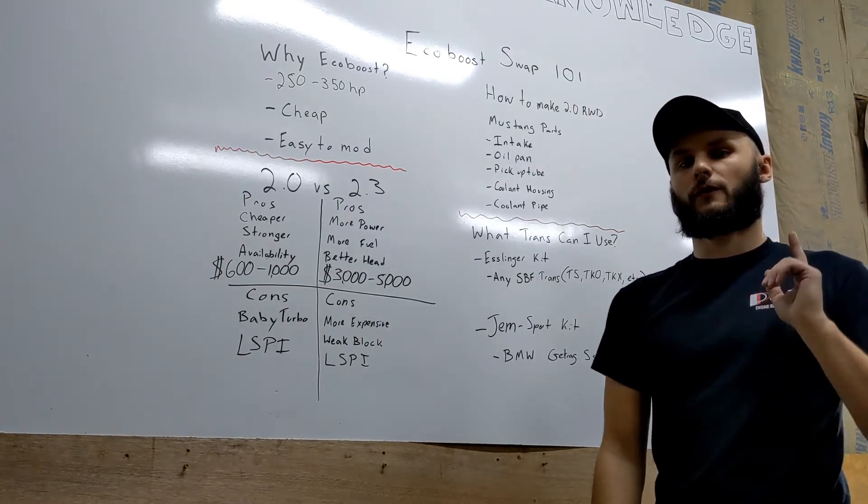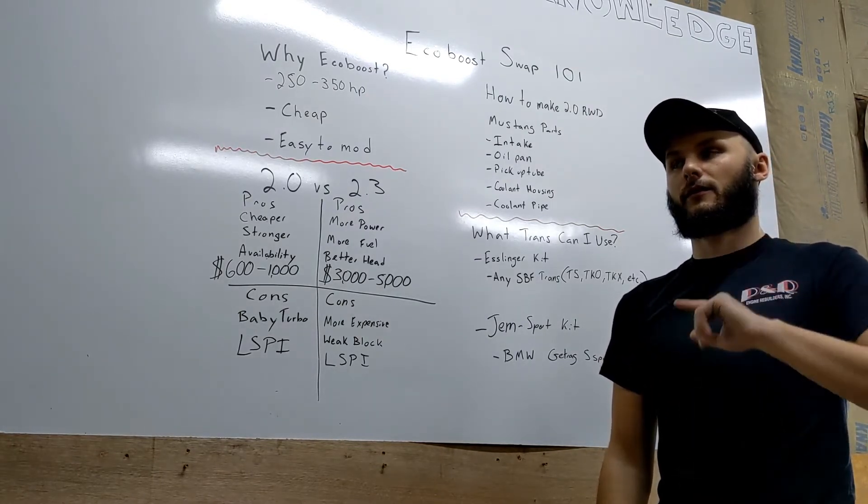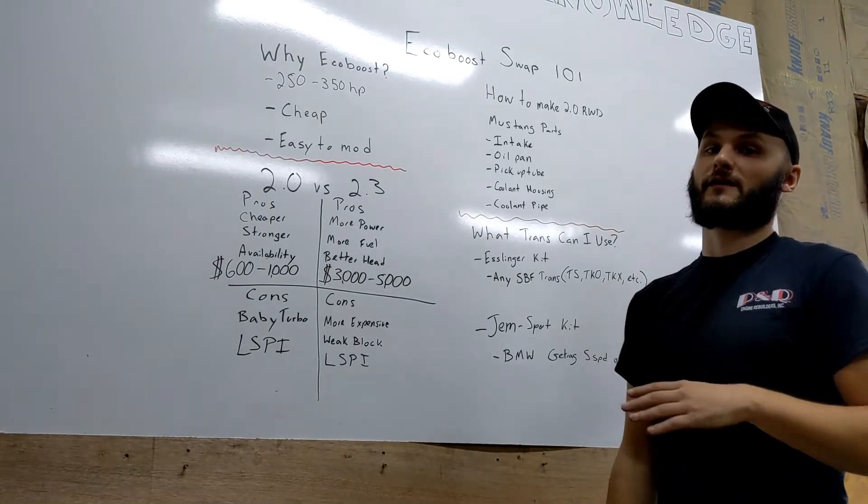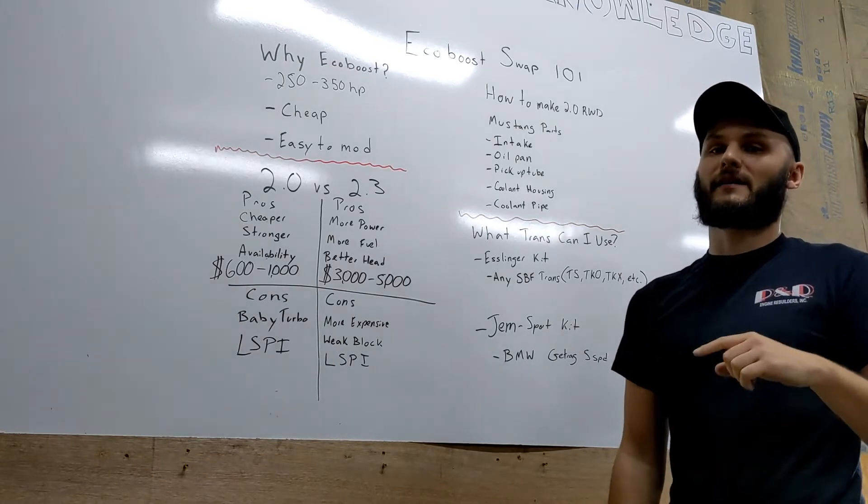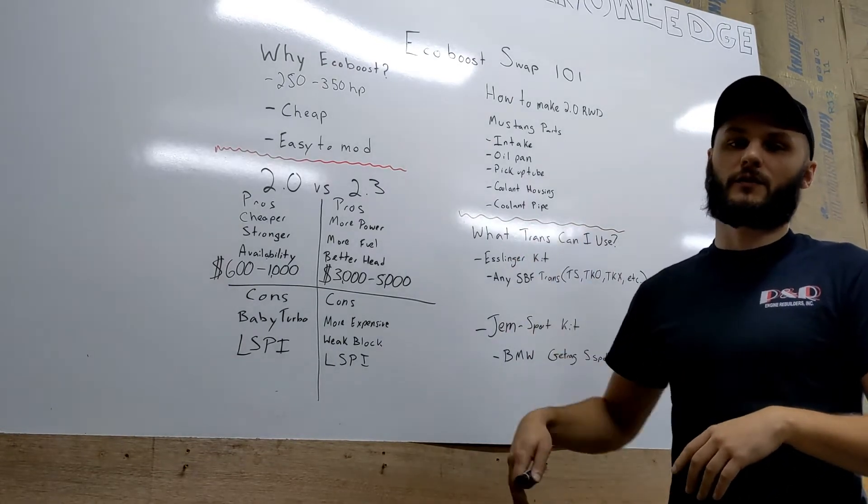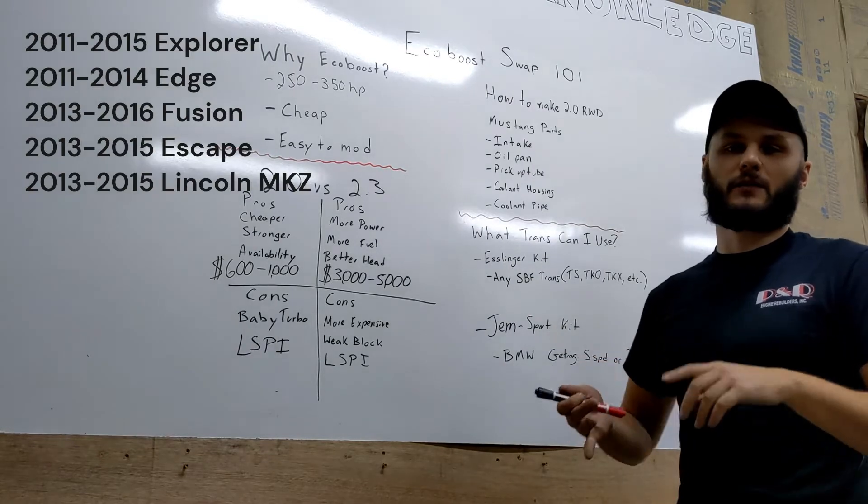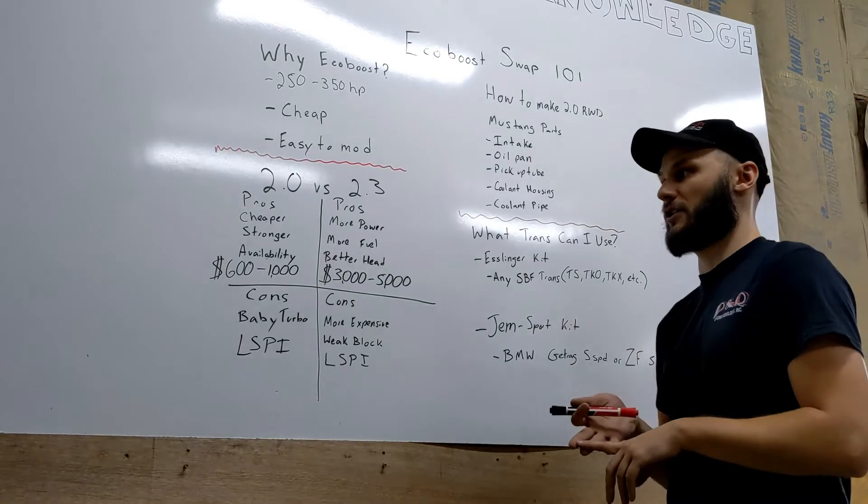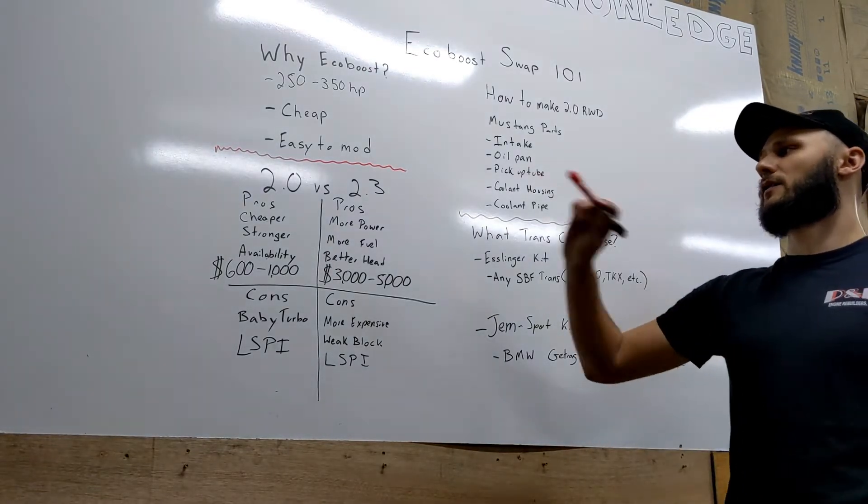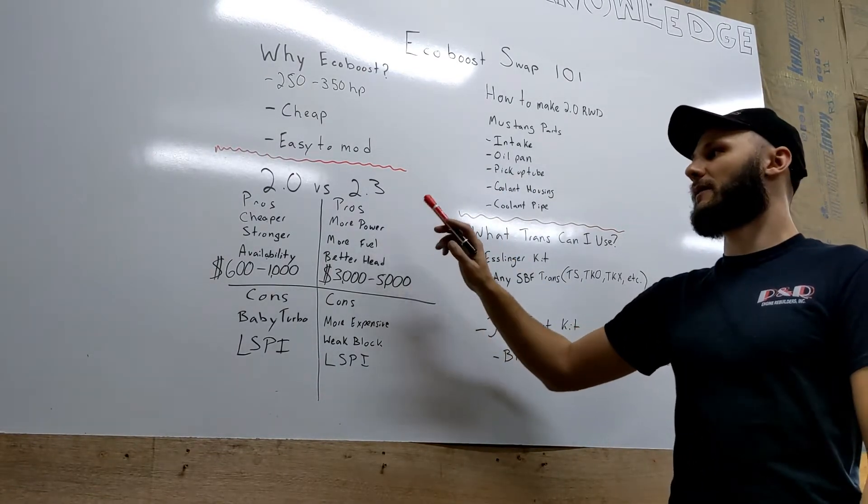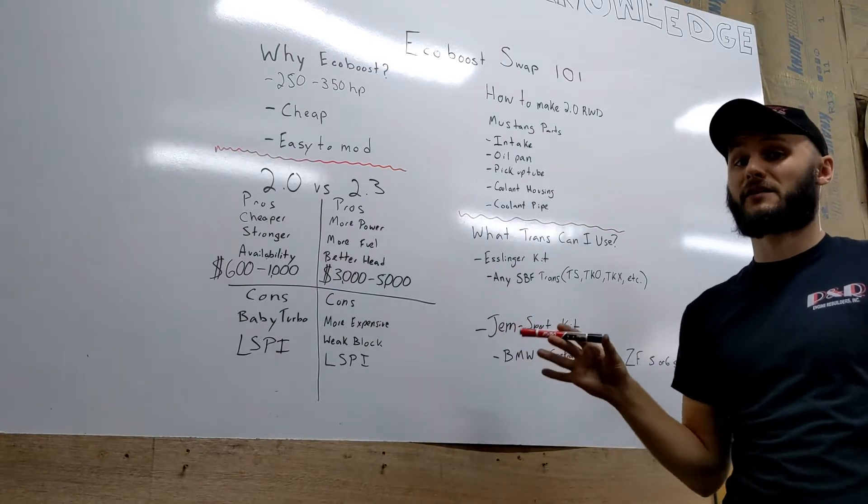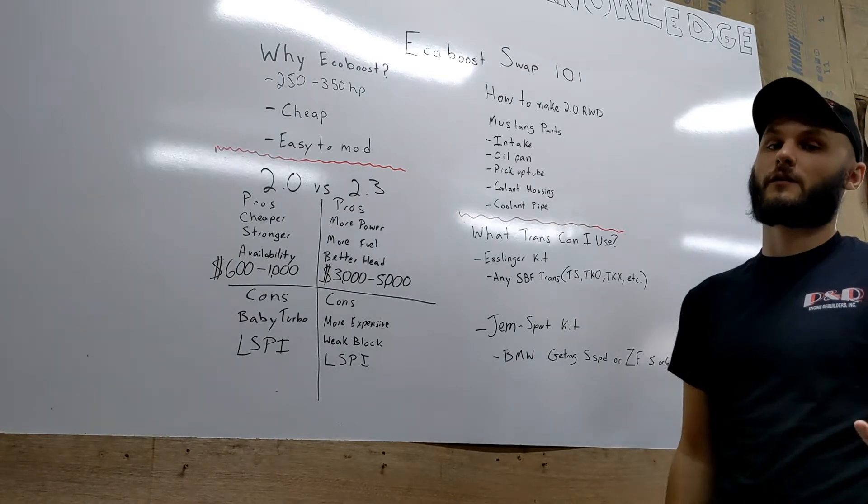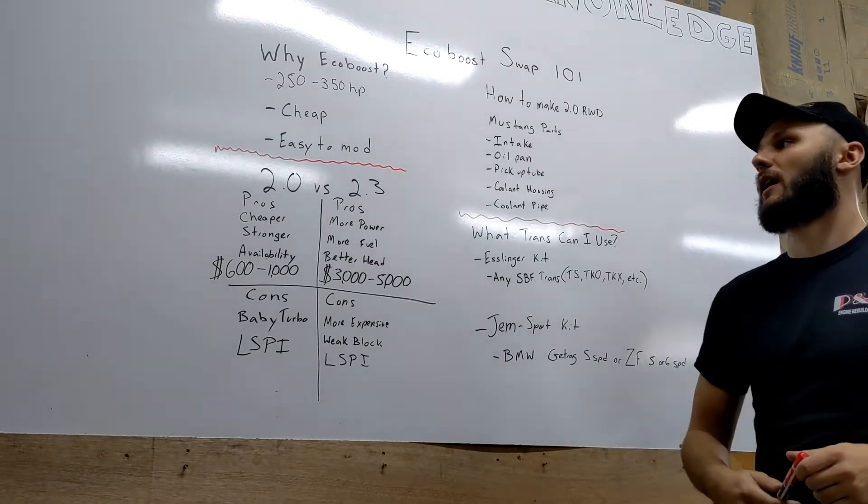You just have to make sure that you look for not a Focus ST 2.0 - those will go for upwards of $2000-$3000. They're the same as a whole list of vehicles that I'll put in the description below. Escapes, Fusions, Edges, a whole lot of Fords use the two-liter EcoBoost front-wheel drive application. The 2.3s you can get out of a Mustang mostly. They'll go from like $3000 to $5000 in LKQ. You might be able to find them somewhere cheaper or find a full parts car to take the engine from.